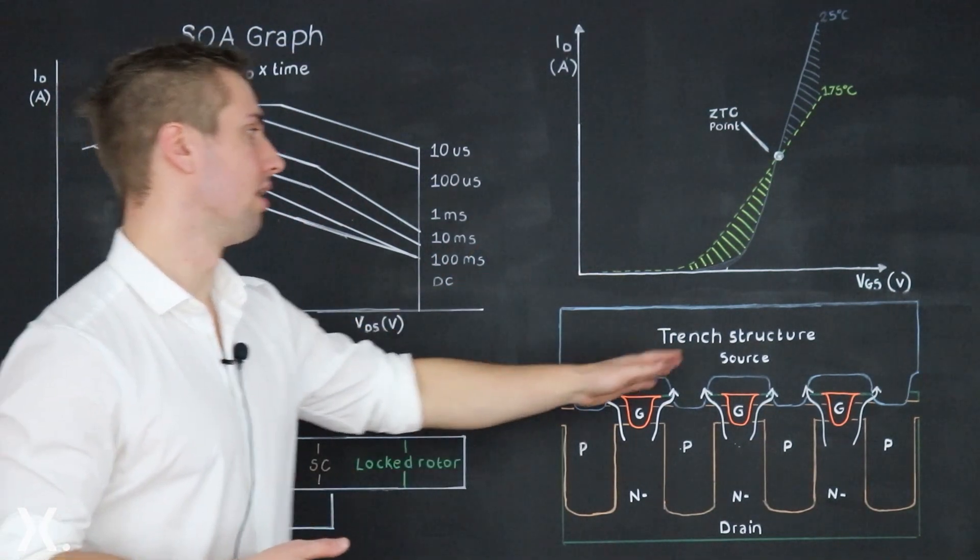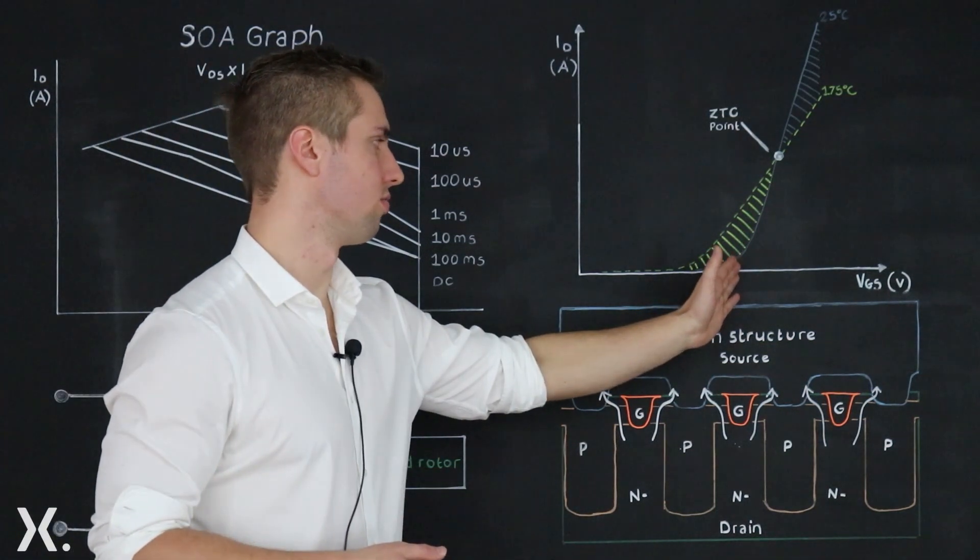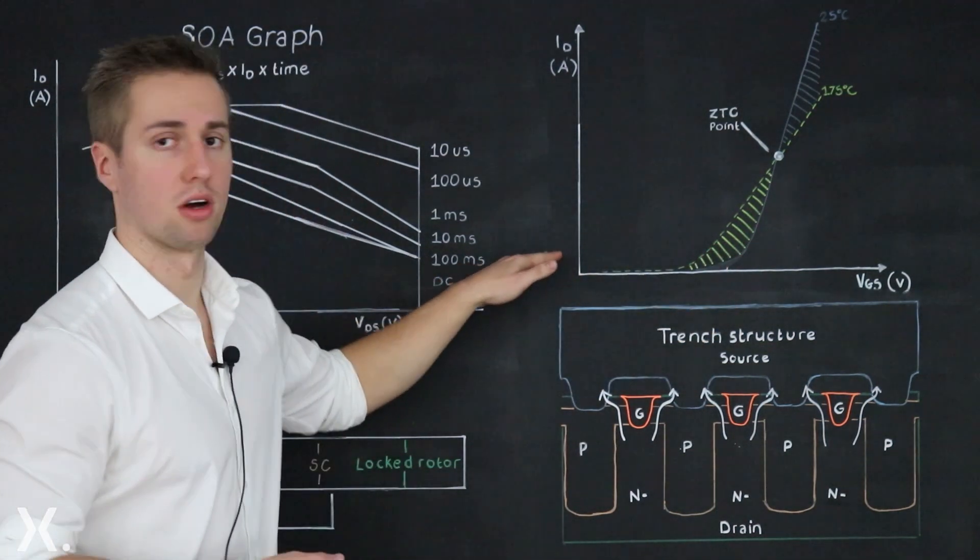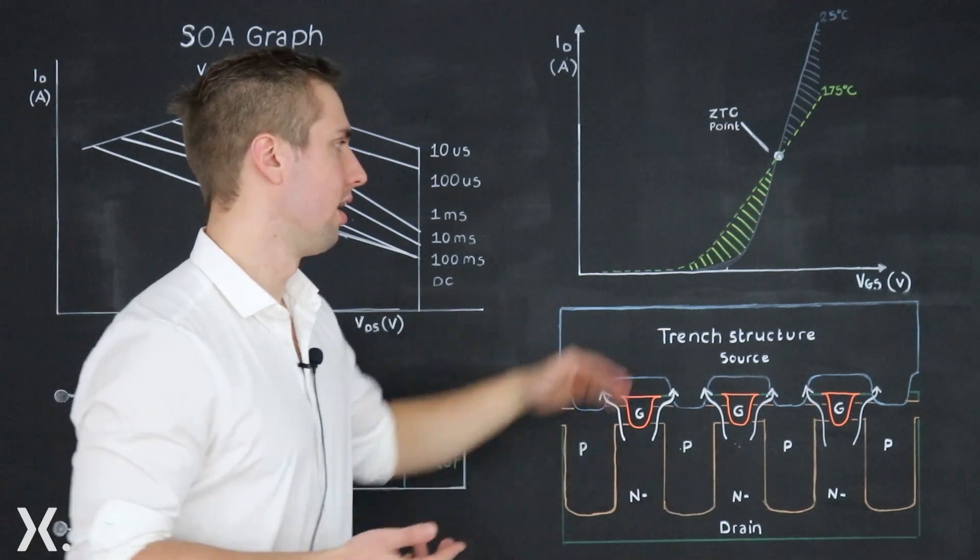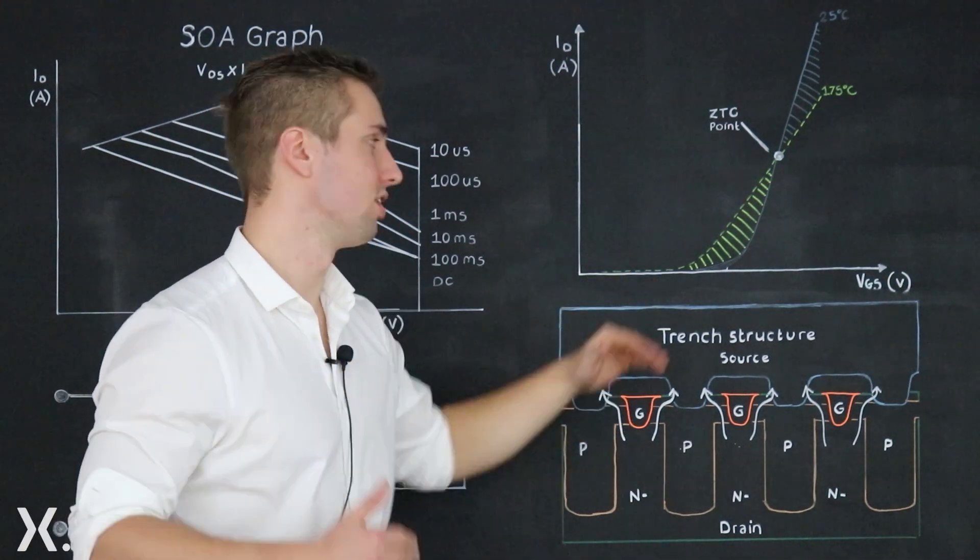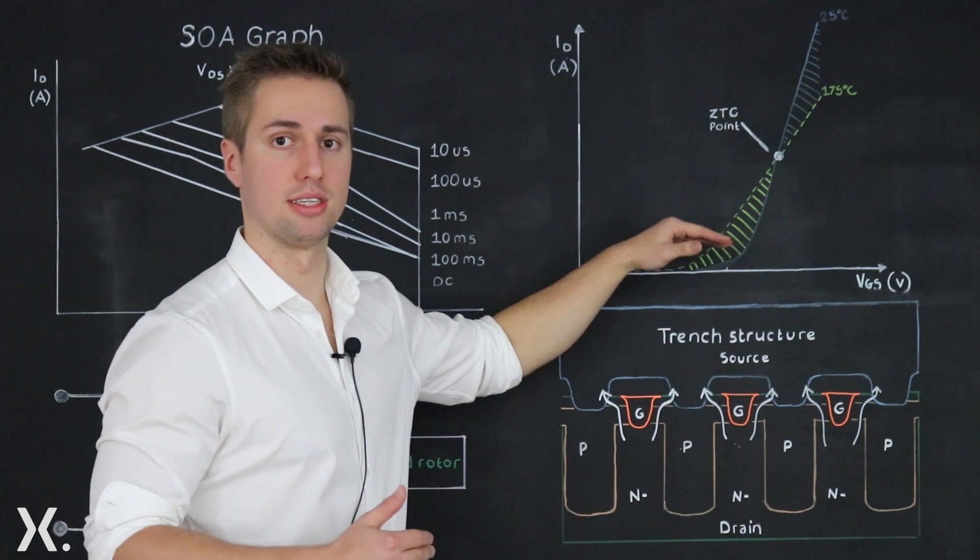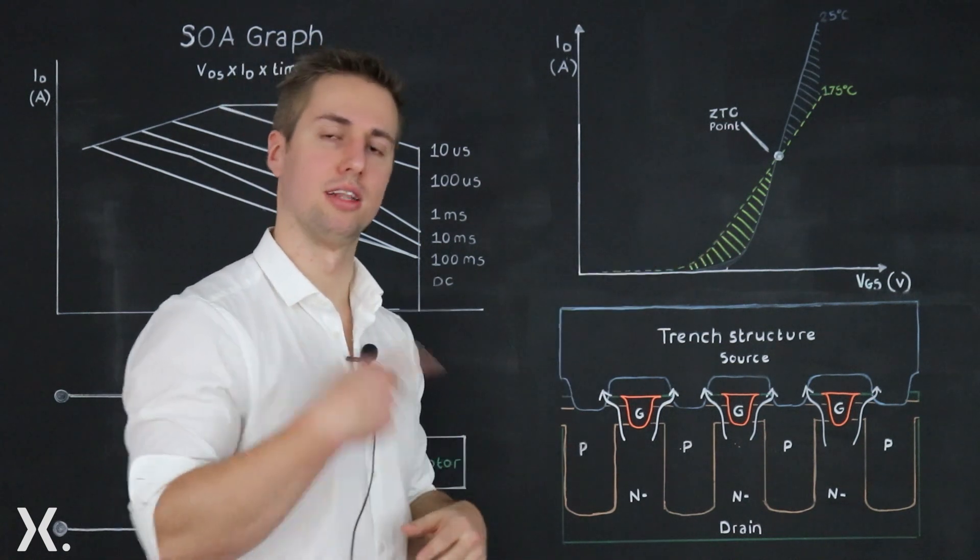Now looking at the graph here at this gate source voltage there's a certain amount of drain current flowing. Heat will be made and this will reduce the threshold voltage increasing the amount of current present again increasing heat and this will then spiral.